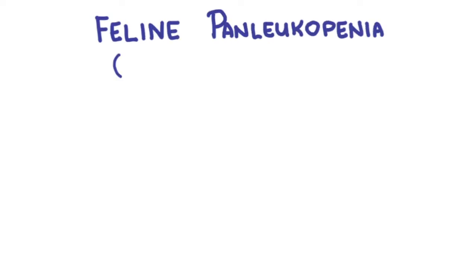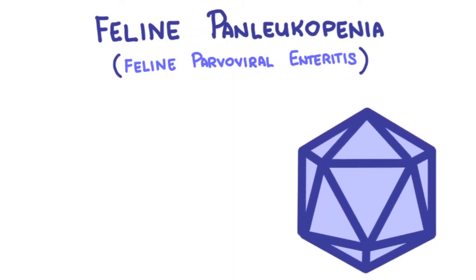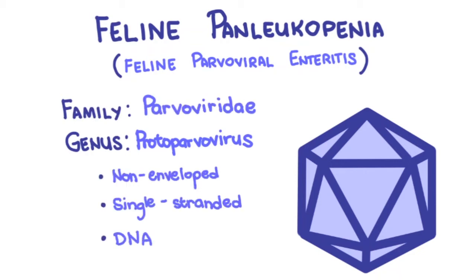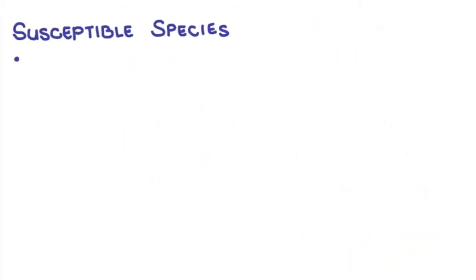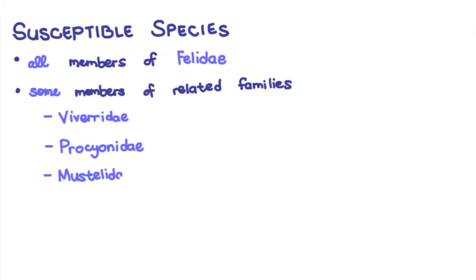Feline panleukopenia, also known as feline parvoviral enteritis, is caused by the feline panleukopenia virus of the genus Protoparvovirus in the family Parvoviridae. It is a non-enveloped, single-stranded DNA virus. It causes disease in all members of the family Felidae and some members of related families: Viverridae, Procyonidae, and Mustelidae.